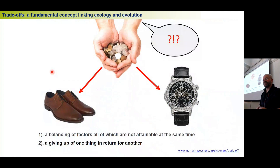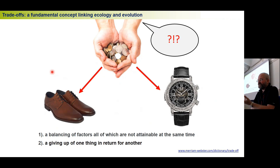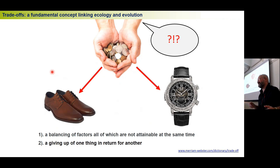The other link is the concept of trade-offs. A trade-off is something we see in everyday life. If you have 100 euros, you have a certain amount of money — you can't do everything with it. You can choose the watch or the shoes, but you can't have both. That's a trade-off: you can have one thing but not the other.